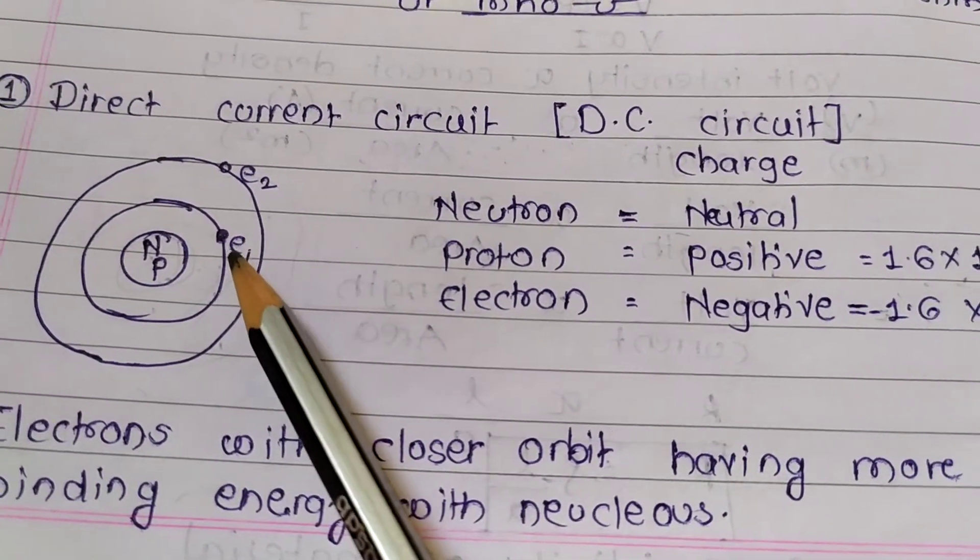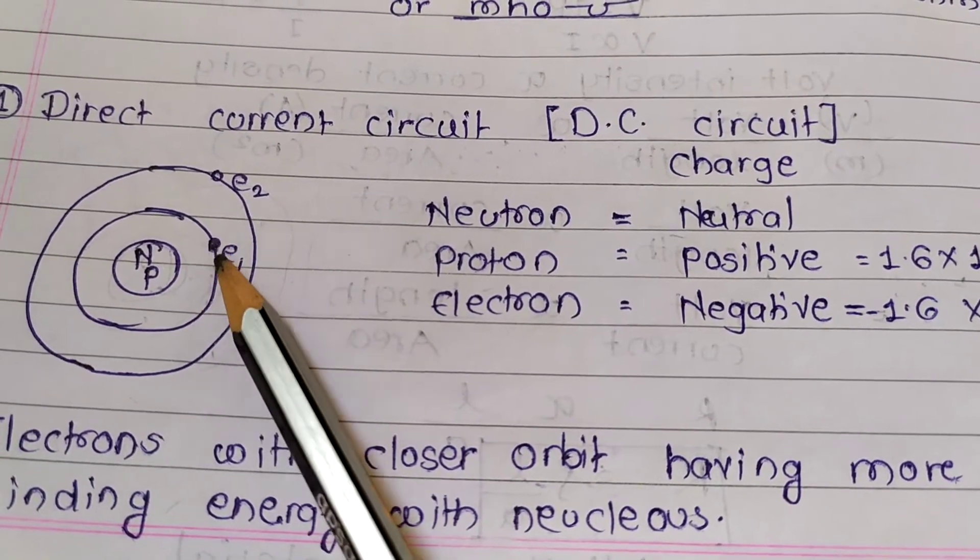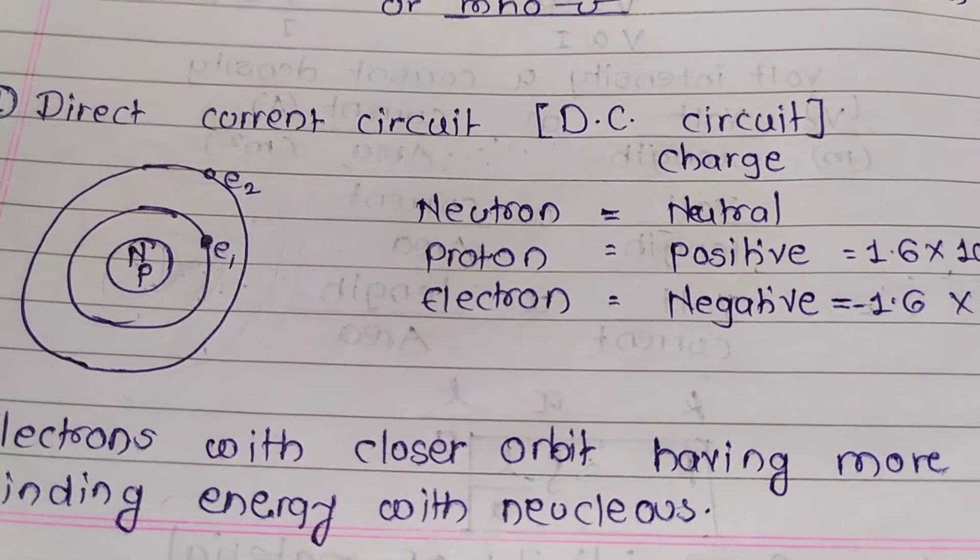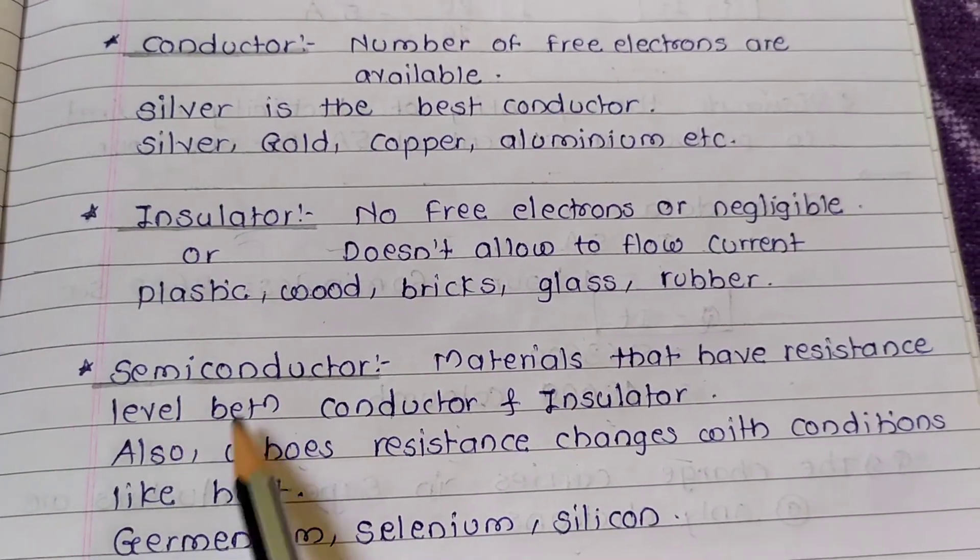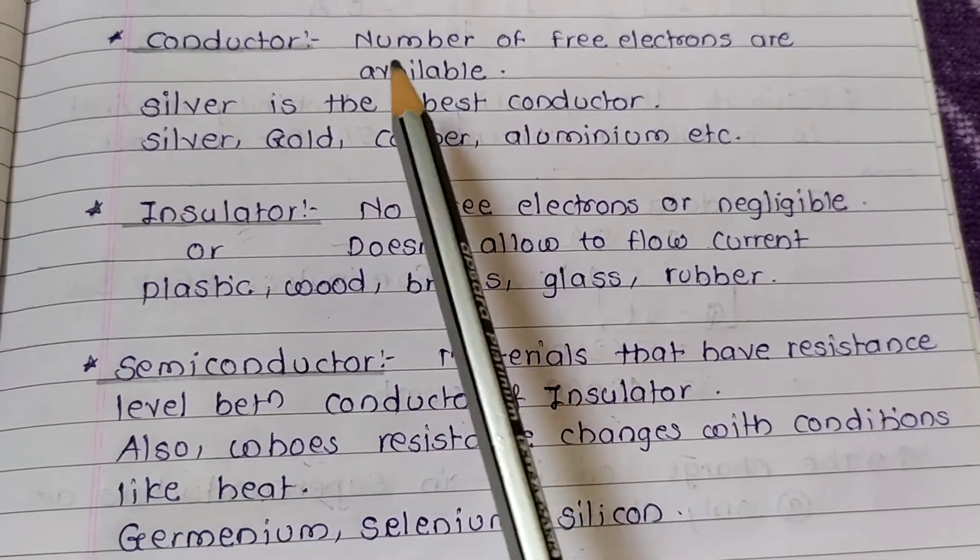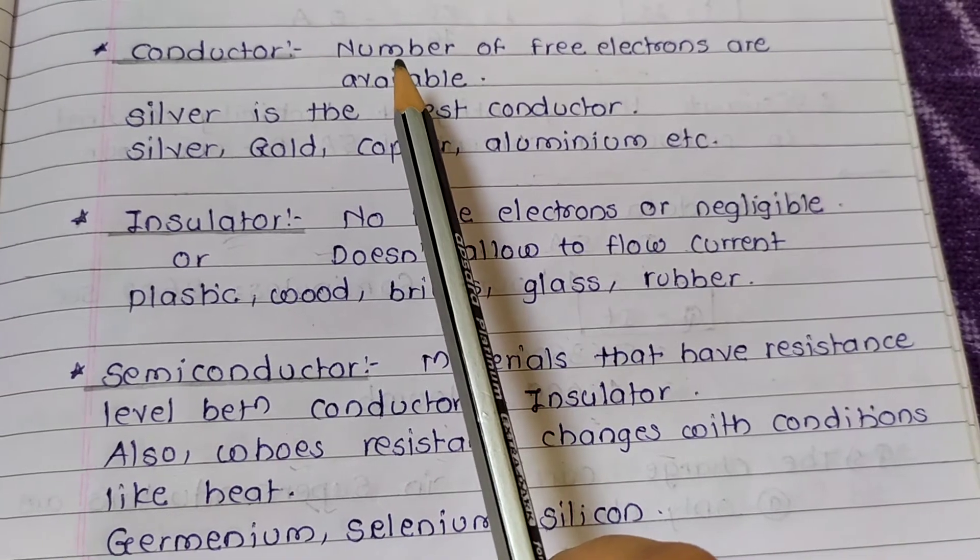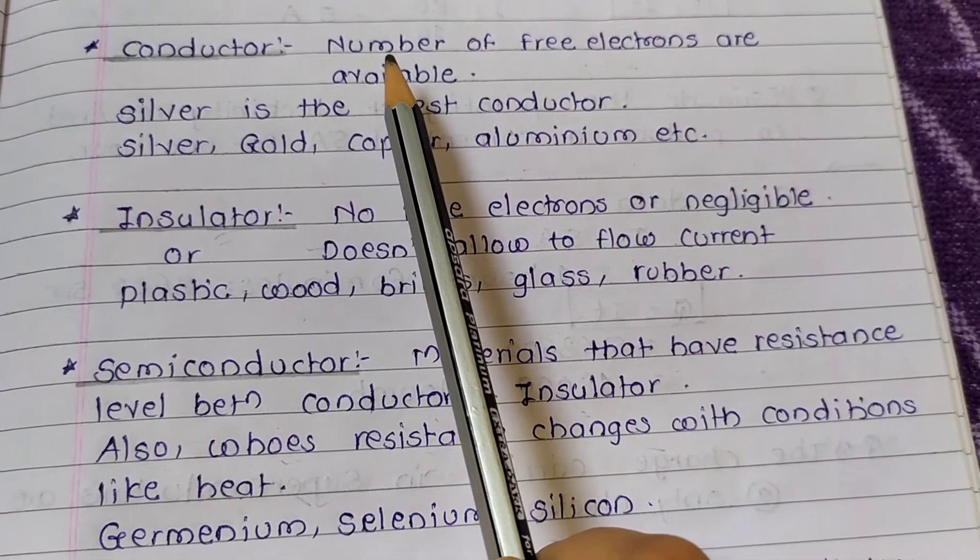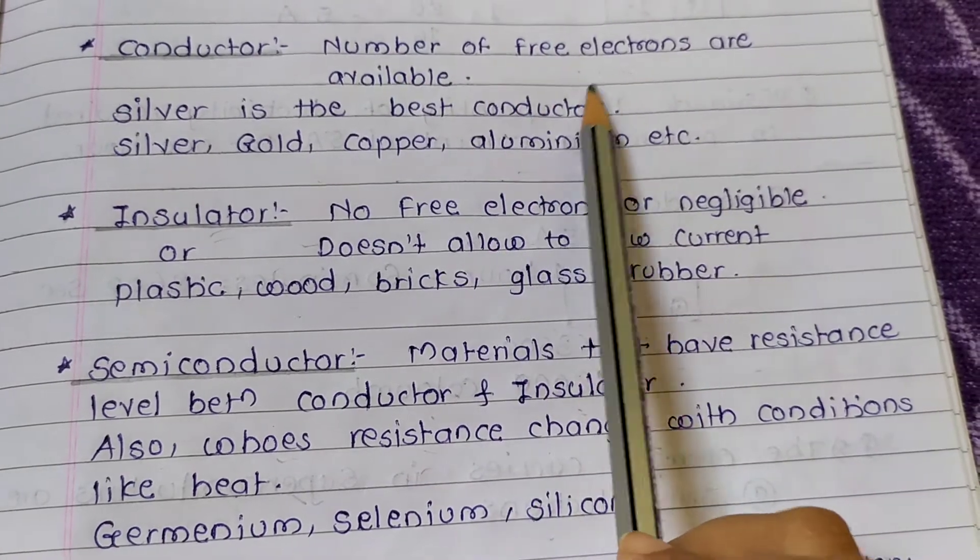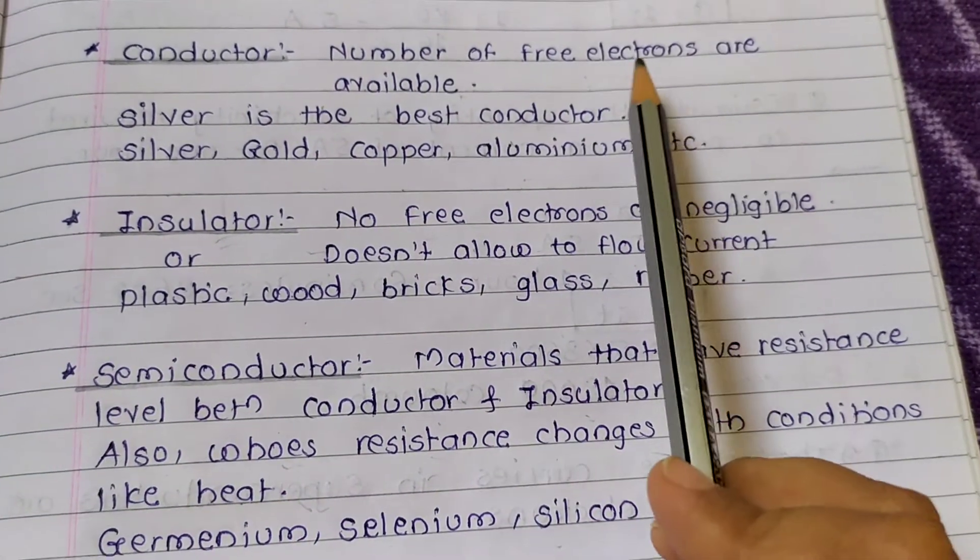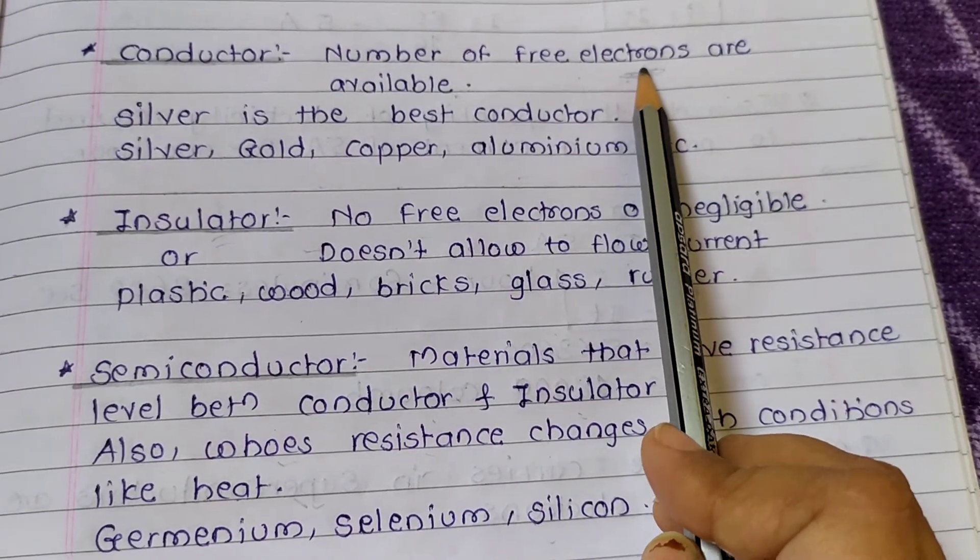Electrons which are closer orbits having more binding energy. Now what are the conductors? Conductors means a material which can easily flow current when number of free electrons are available.